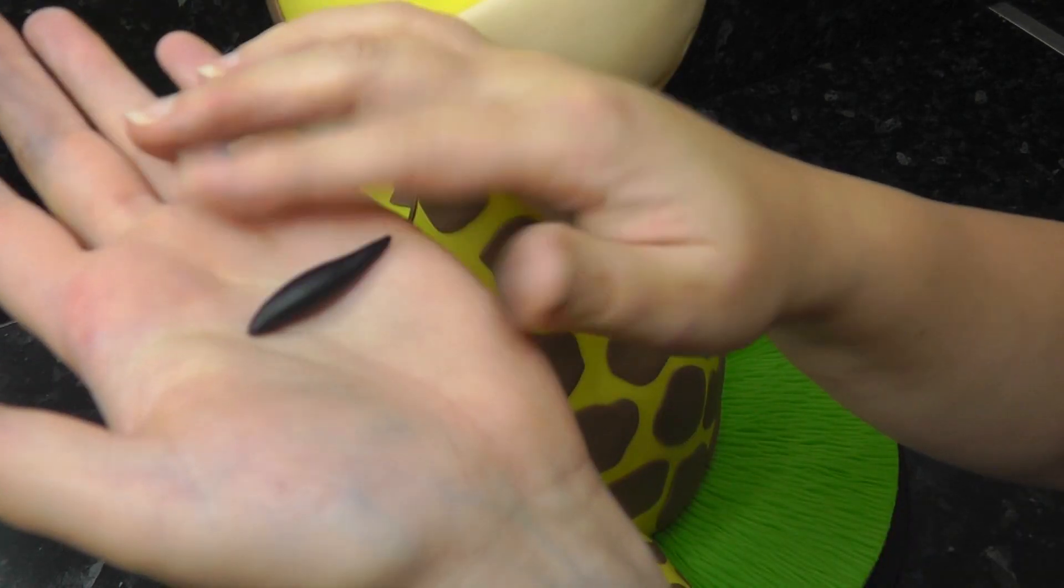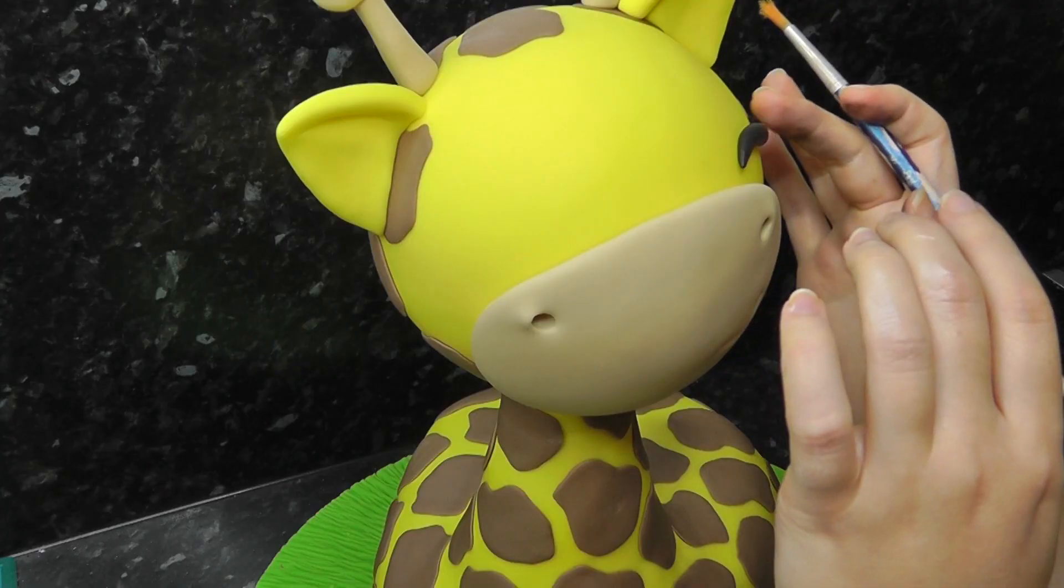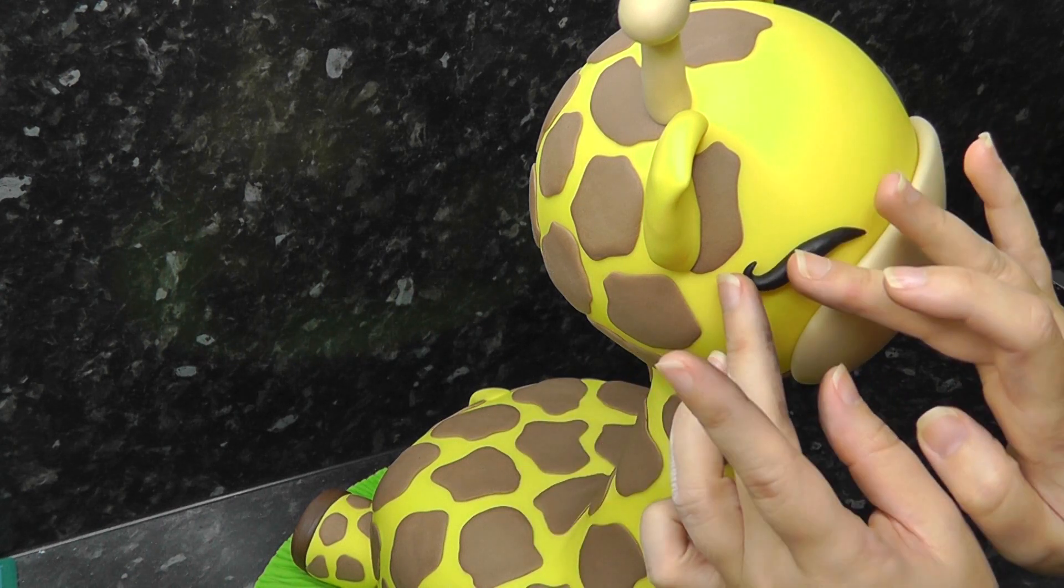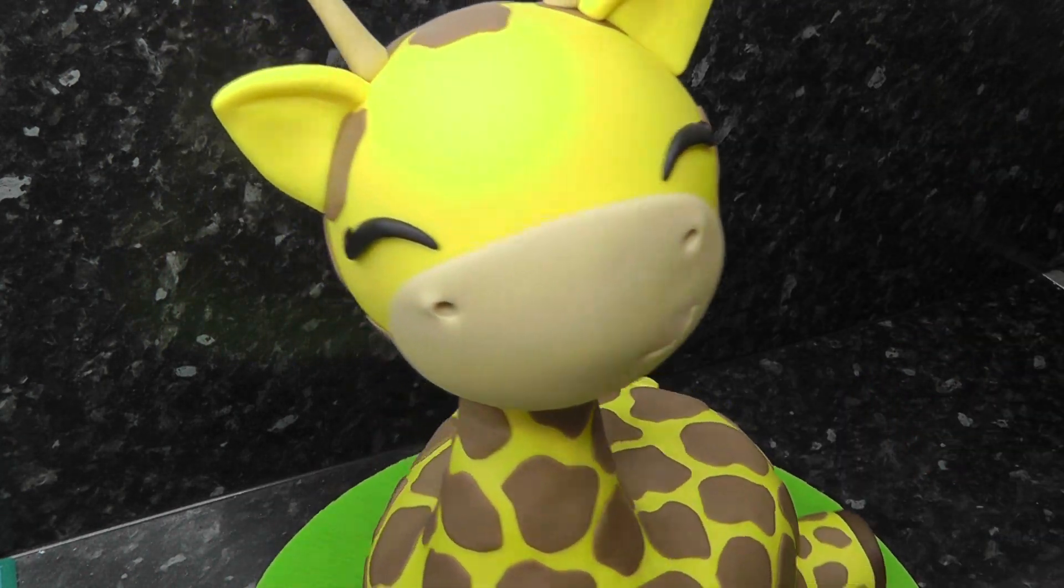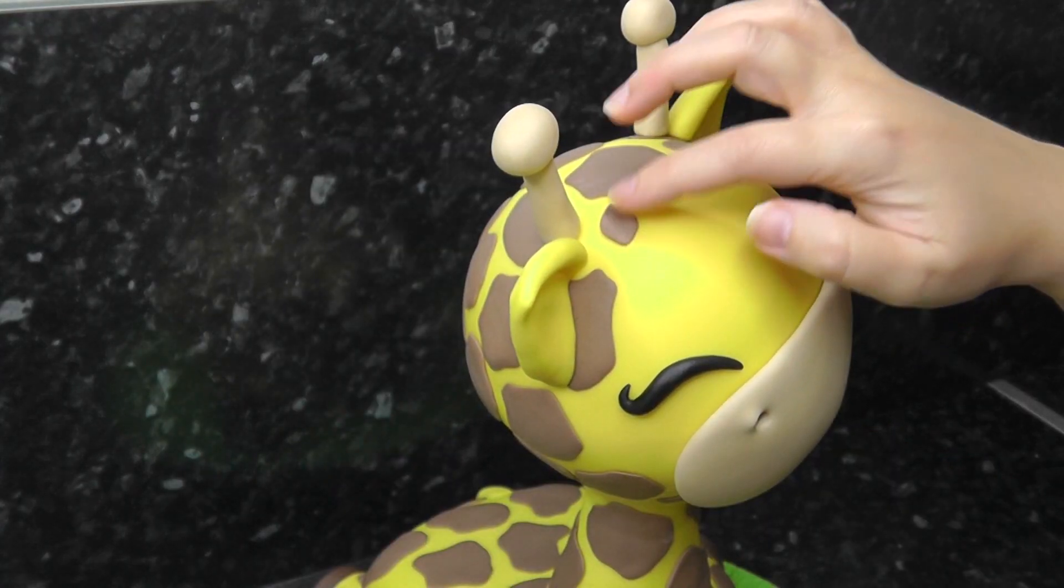The eyes are done with tapered pieces of black paste stuck on either side of the muzzle with a little bit curled up at the end for eyelashes.